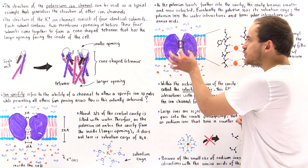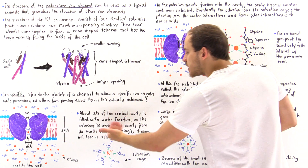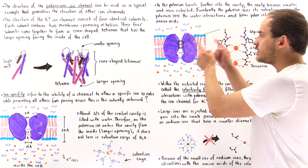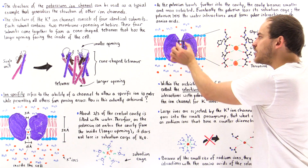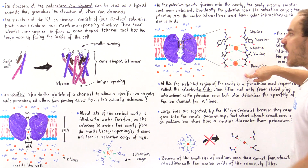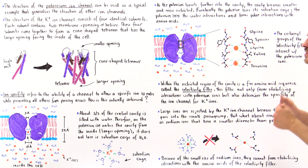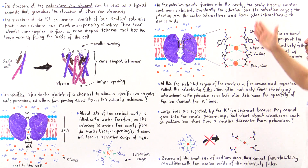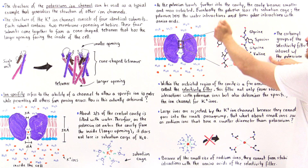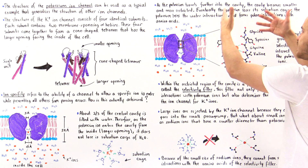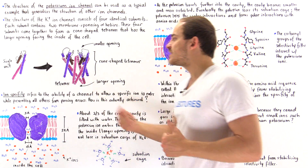It turns out that within this restricted region of the cavity, there is a five amino acid sequence on each side of the potassium ion known as a selectivity filter: threonine, valine, glycine, tyrosine, and glycine — one on the left side and one on the right side. We have these identical sequences because we have four identical polypeptide chains creating this tetrameric structure.